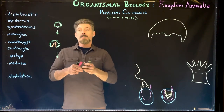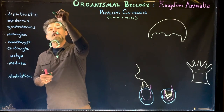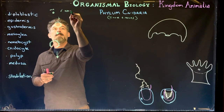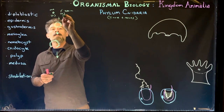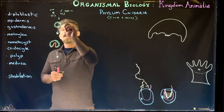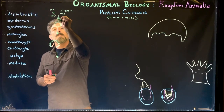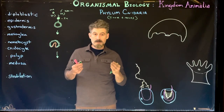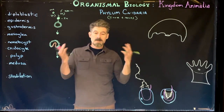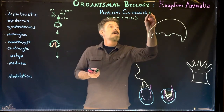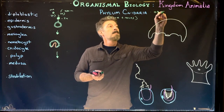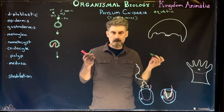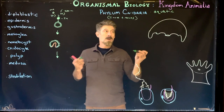Looking at development: we have an unfertilized egg, an ovum, fertilized by a sperm. These are both haploid cells. They undergo fertilization — typically a broadcast spawning process, meaning organisms release sperm and eggs into the water column. These are aquatic organisms, only found in water, and for the most part about 98–99% of all species are marine.